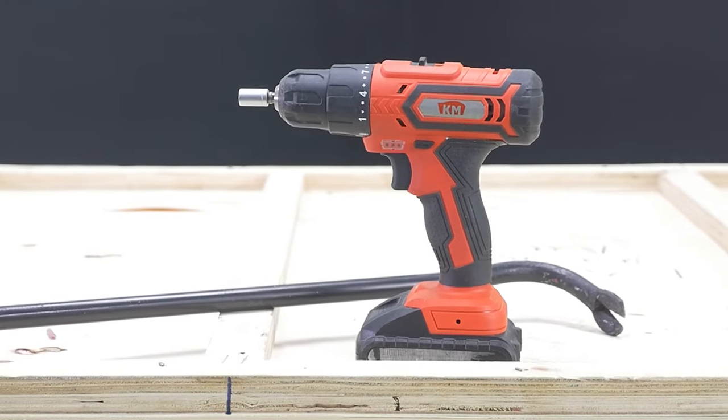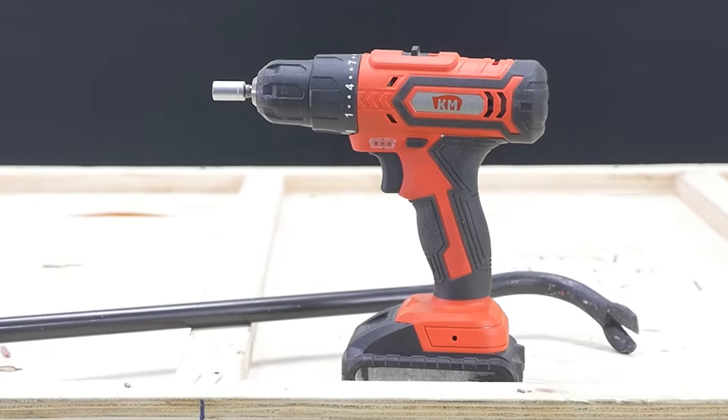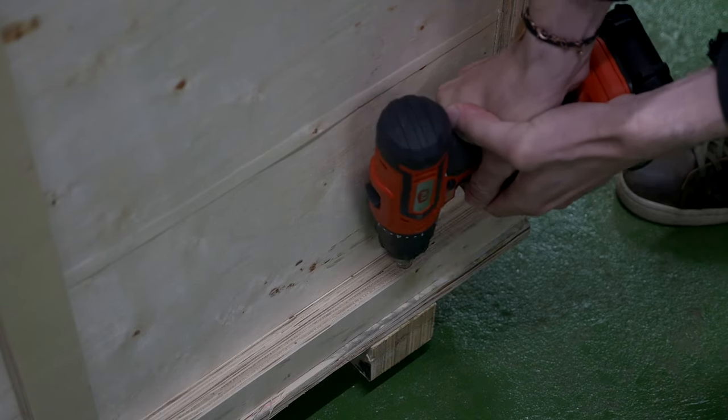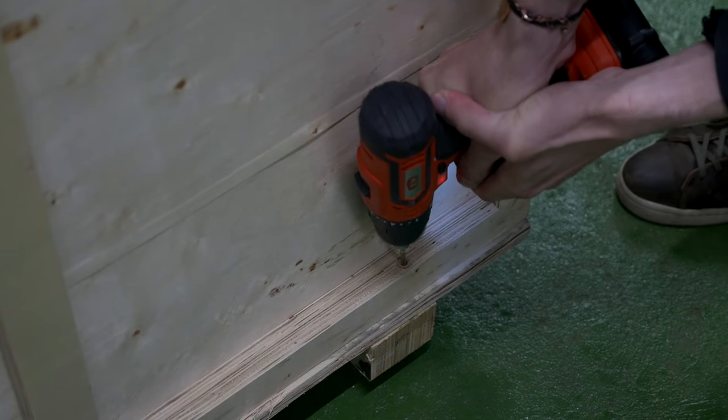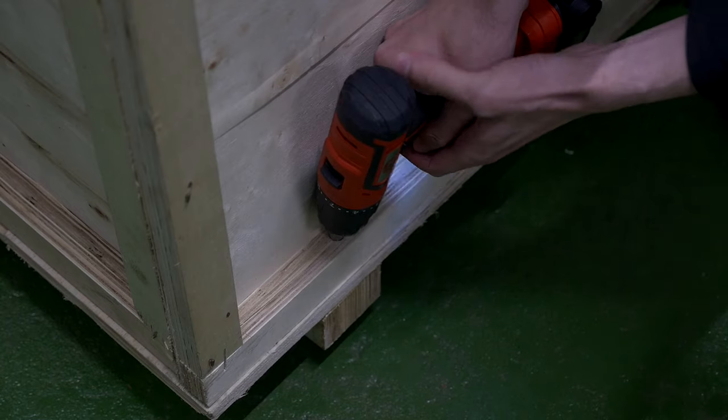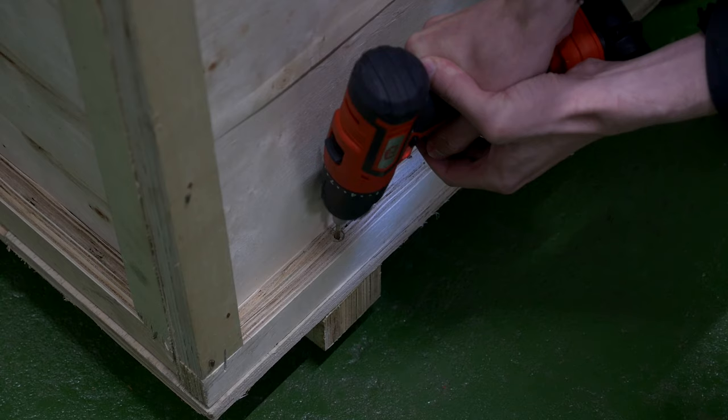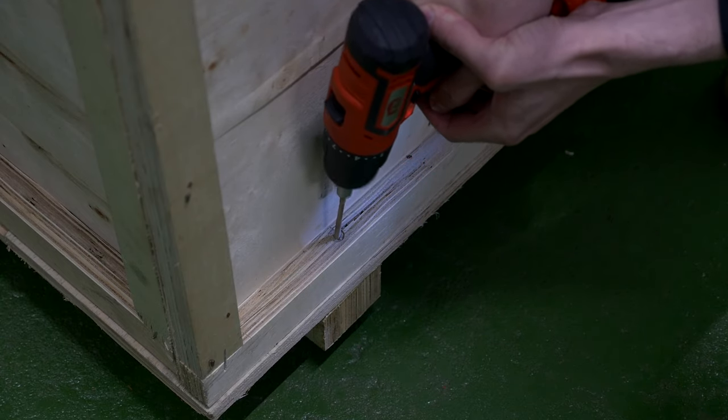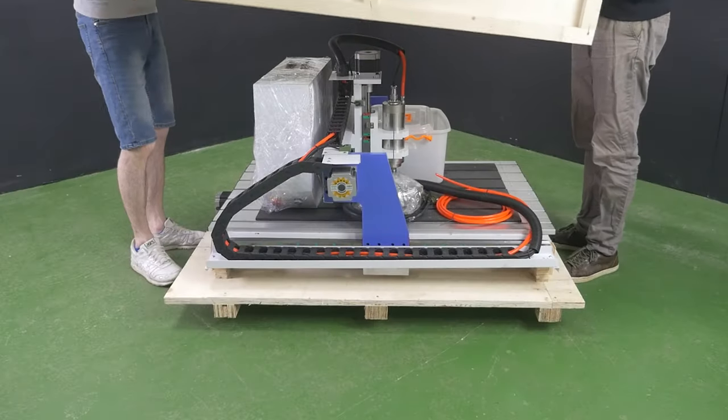To unpack the machine, you will need a screwdriver with an 8mm head. First, undo bolts around the perimeter of the lower part of the machine box. Use the screwdriver. Put the box away.